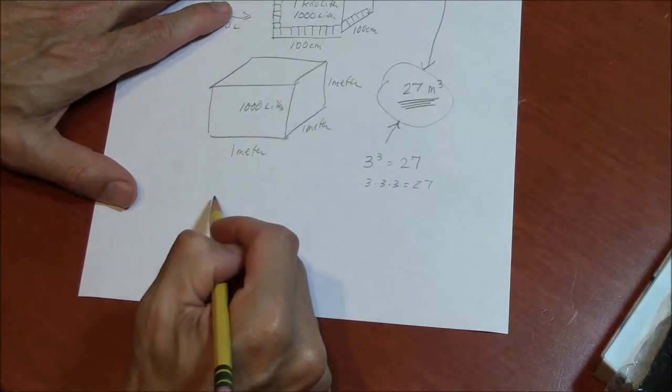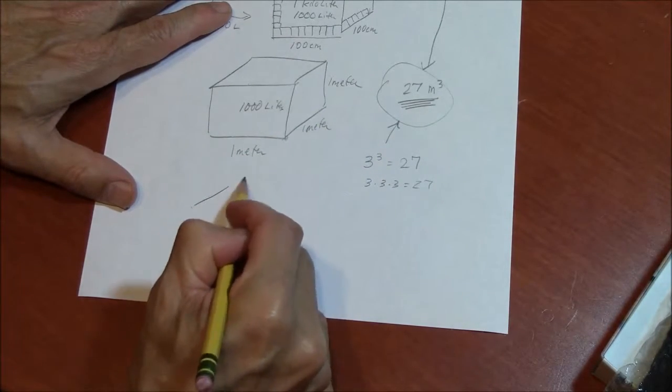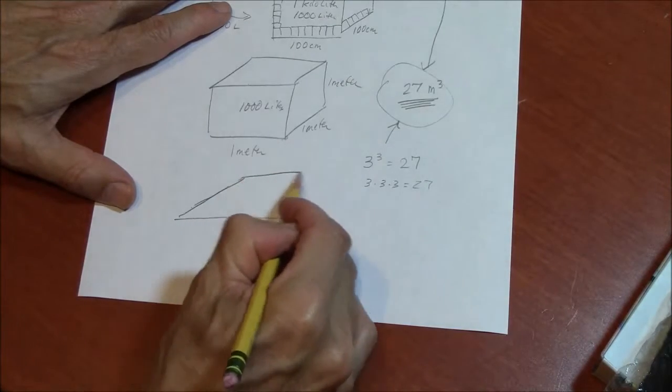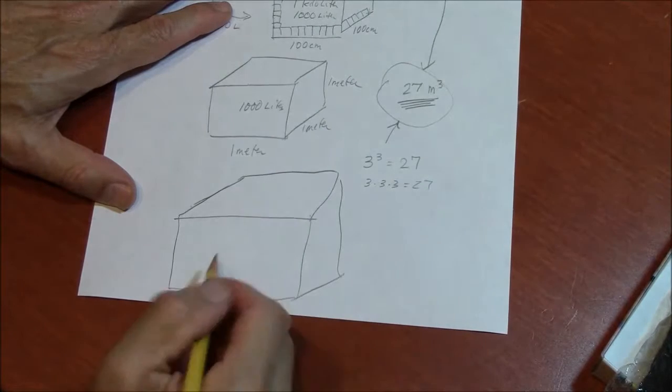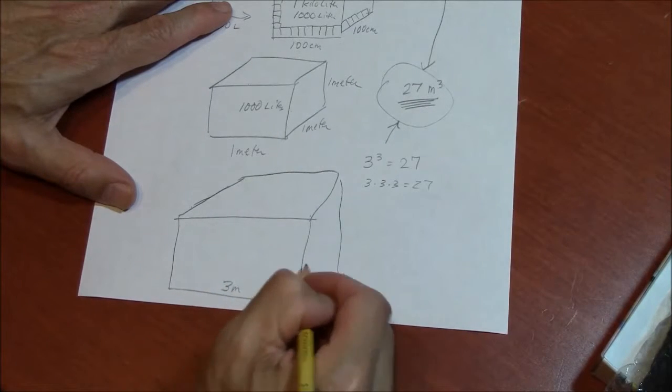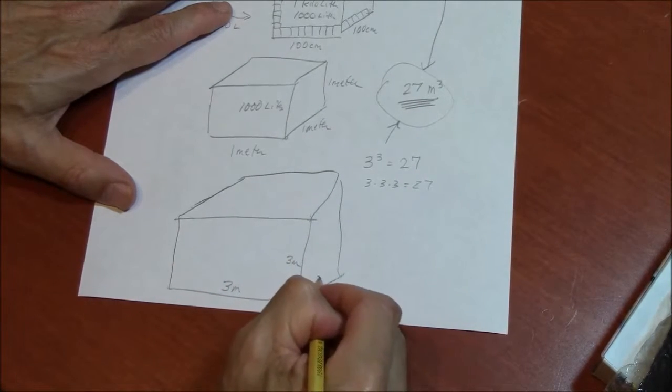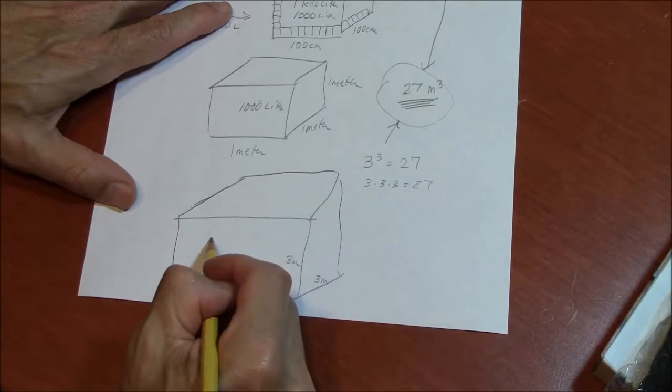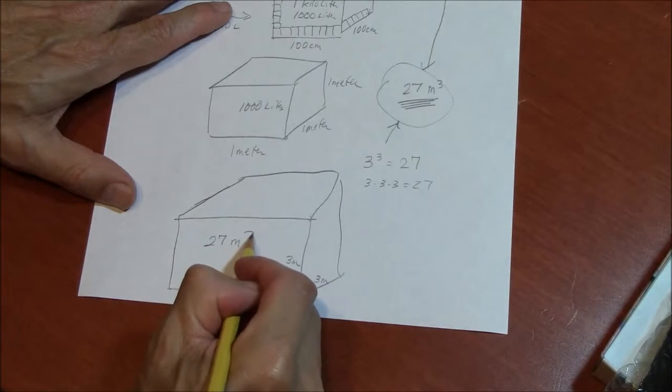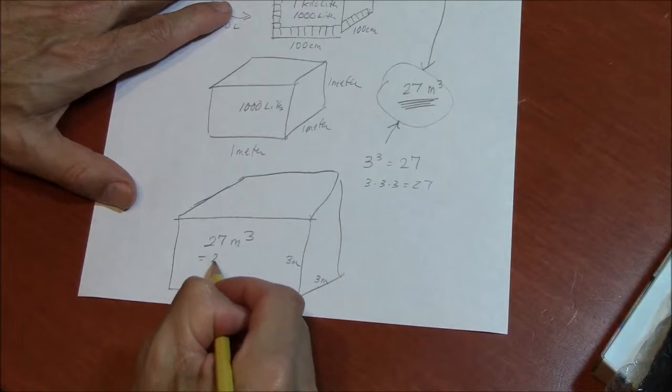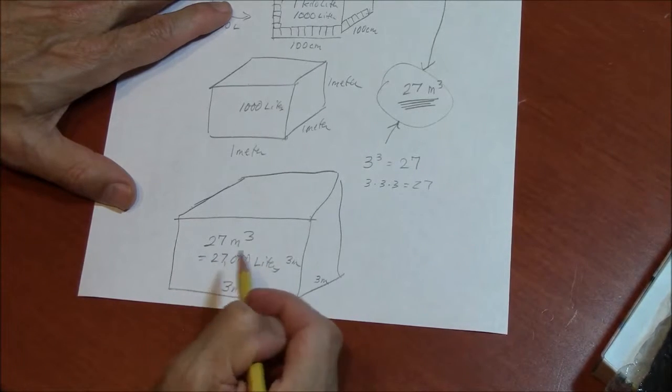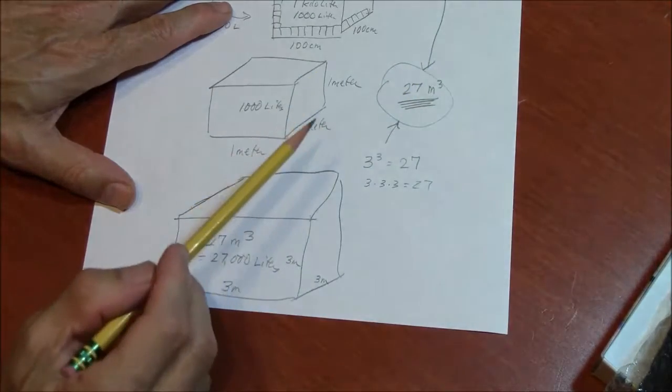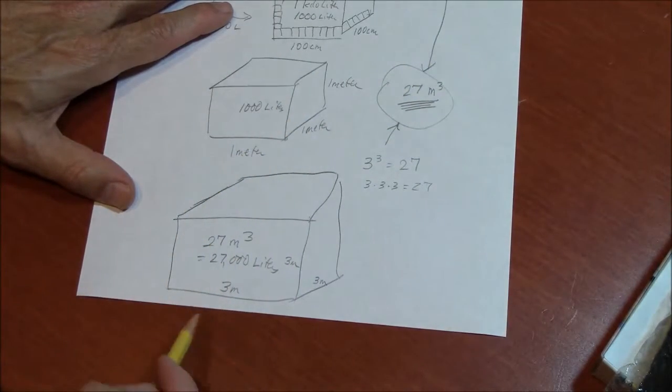Envision a cube that is a really big cube. 3 meters by 3 meters by 3 meters. And that will be 27 cubic meters. And that will be 27,000 liters. Which is the size of 10 pounds of helium.